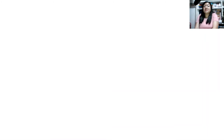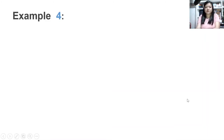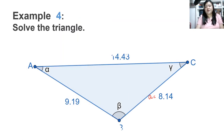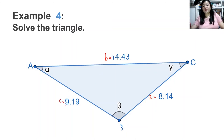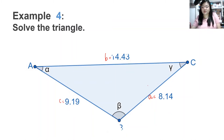This will be our last triangle for this lesson. For this triangle, opposite alpha is A with measure 8.14; opposite beta is B with measure 14.43; and opposite gamma is C with measure 9.19. We know that the side opposite the largest angle is the longest side. Here, the largest angle should be beta because the longest side is B. So let us get the value of beta first.